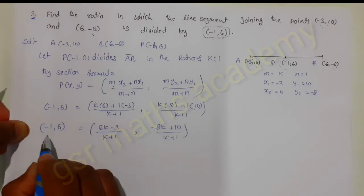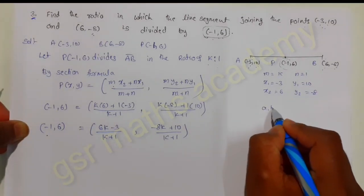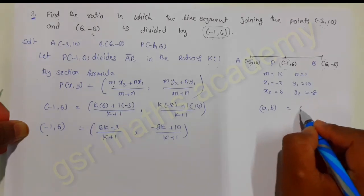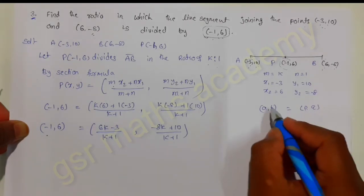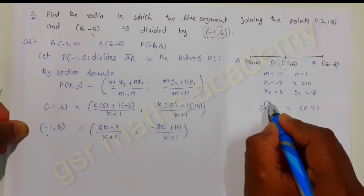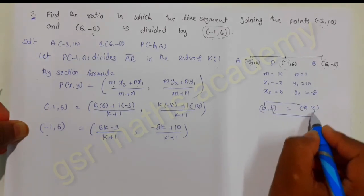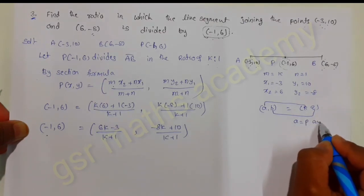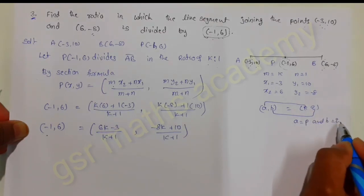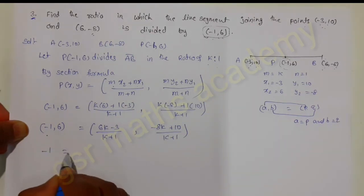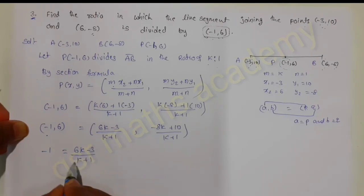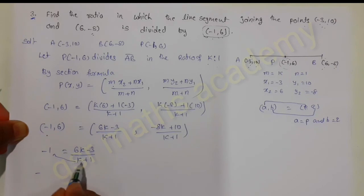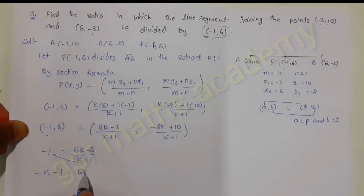Now on equating the x-coordinates we are going to get the value of k. If two ordered pairs are equal, their first coordinates are equal and second coordinates are equal. So on equating the first coordinates, you get minus 1 equals 6k minus 3 divided by k plus 1. Transporting the denominator to the other side gives minus 1 times k plus 1 equals 6k minus 3.